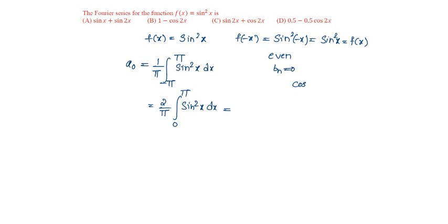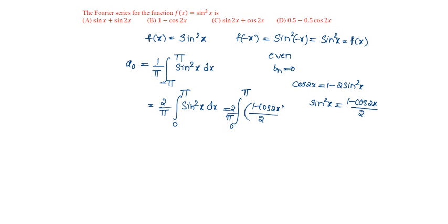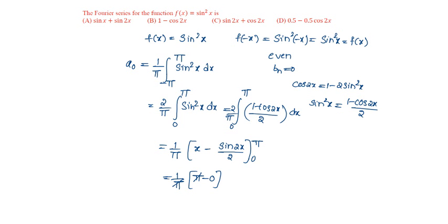We know cos2x = 1 - 2sin²x, so sin²x = (1 - cos2x)/2. Substituting: (2/π) integral from 0 to π of (1 - cos2x)/2 dx. The 2s cancel, giving (1/π). Integrating: x - sin2x/2, evaluated from 0 to π, equals (1/π)(π - 0). The π cancels, so a₀ = 1.